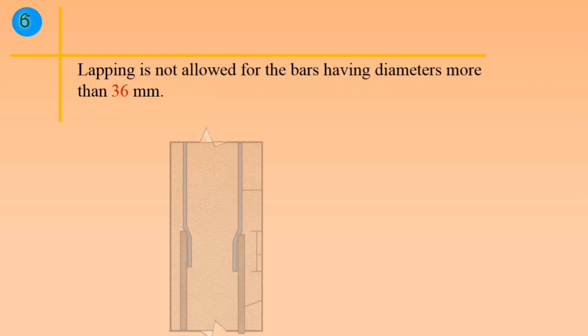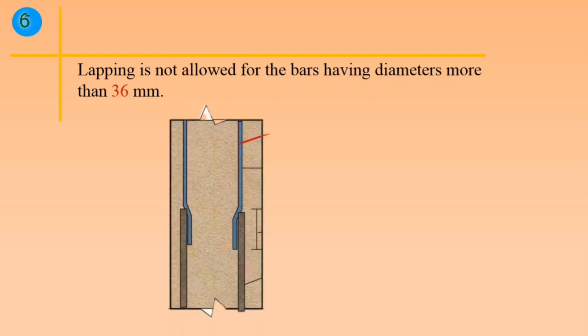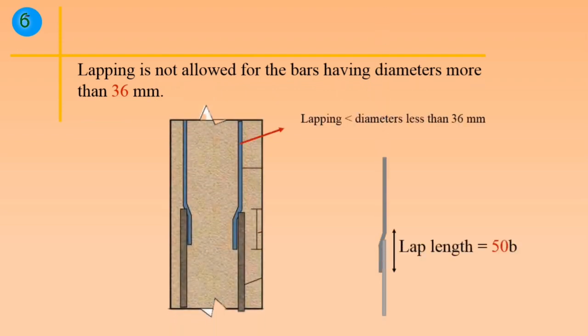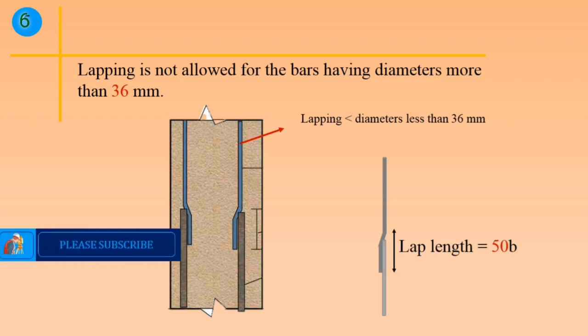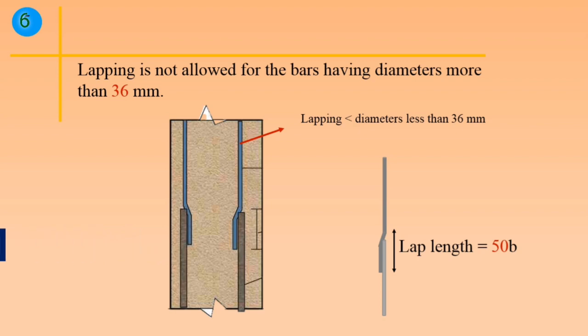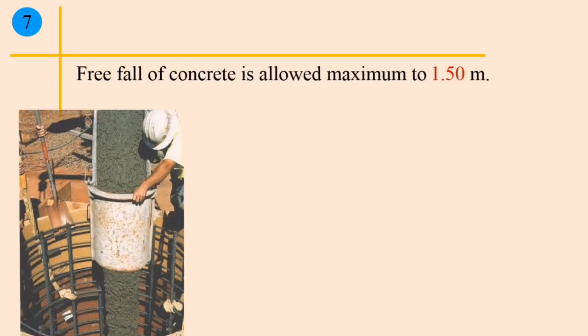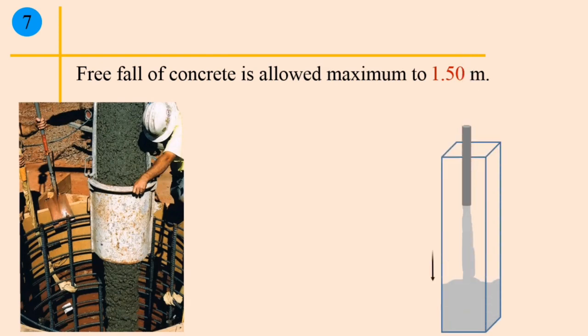Point 6: Lapping is not allowed for bars having diameters more than 36 mm. Point 7: Free fall of concrete is allowed to a maximum of 1.50 m.